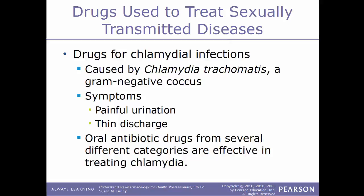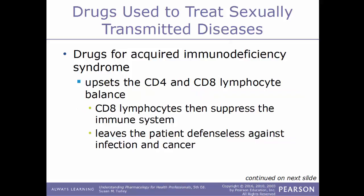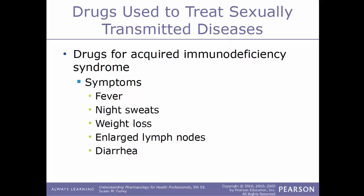AIDS, acquired immunodeficiency syndrome, is caused by the HIV retrovirus, which invades CD4 lymphocytes in the blood to reproduce. Large numbers of CD4 lymphocytes are destroyed, upsetting the balance between CD4 and CD8 lymphocytes. CD8 lymphocytes then suppress the immune system, leaving the patient defenseless against infections and cancers. Symptoms of AIDS include fever, night sweats, weight loss, enlarged lymph nodes, and diarrhea.